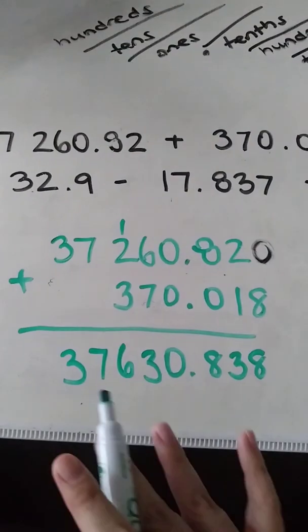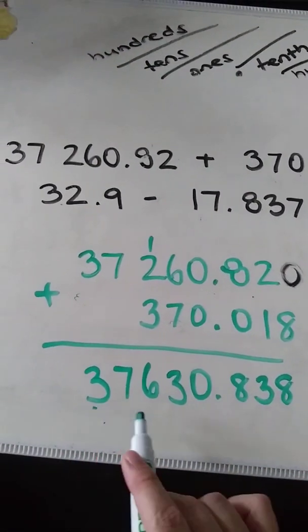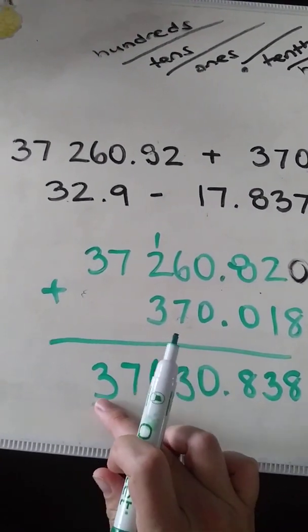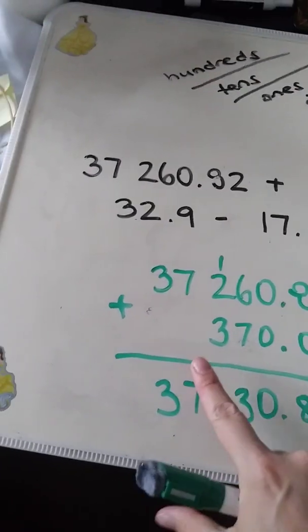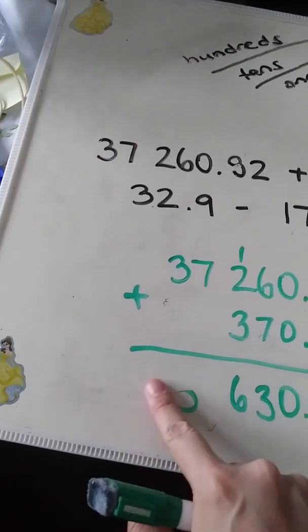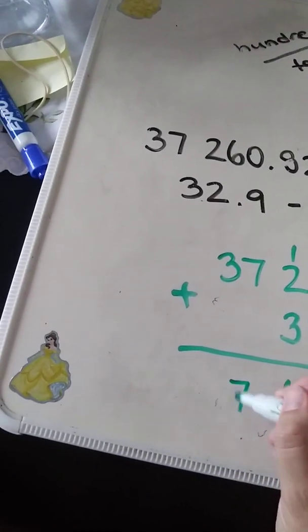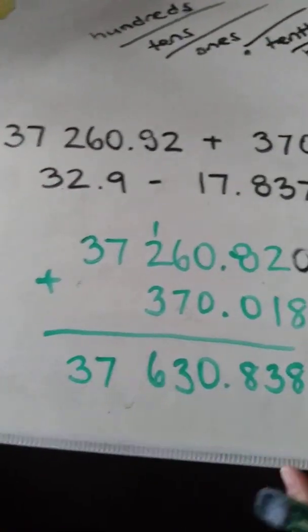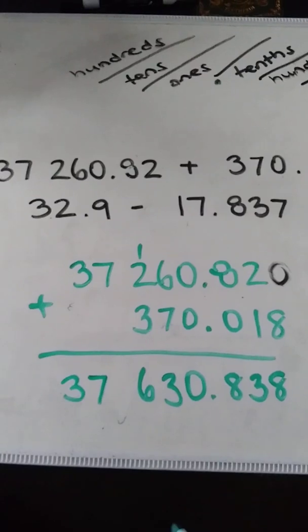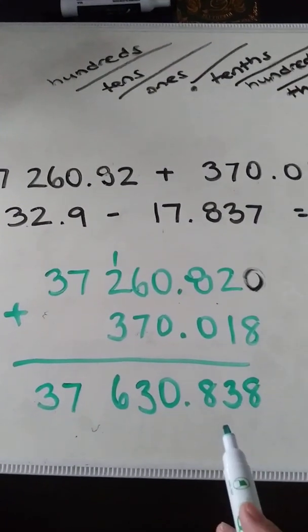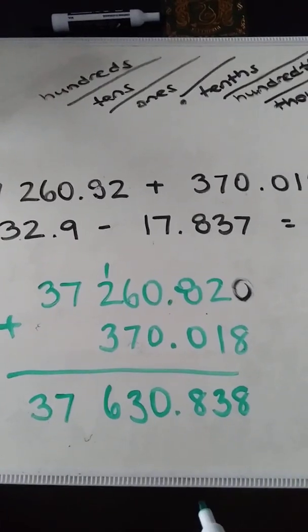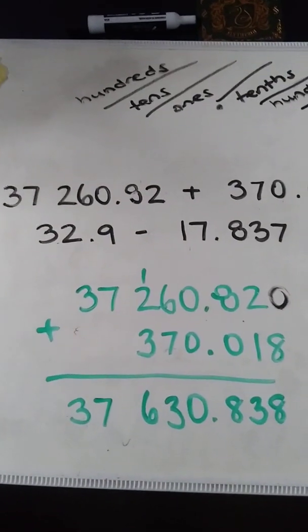So I have my answer there. And remember, we always want to separate the thousands and the hundreds. So you can put a comma there. You can rewrite the number if you like with the appropriate spacing. So I entered that one: 37,630 and 838 thousandths. So that's our example with addition.